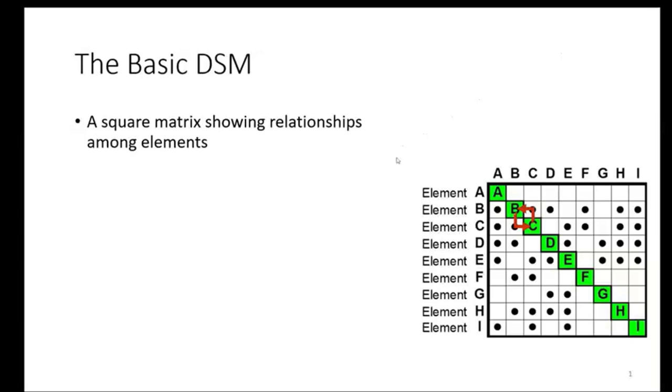And we have off-diagonal elements that allow you to see relationships among these. So these relationships can be directional. Like we look down a column to see outputs from an element. We see that element B provides an output that becomes an input to element C. And similarly, looking at the column for element C, we see its output becoming an input for element B.